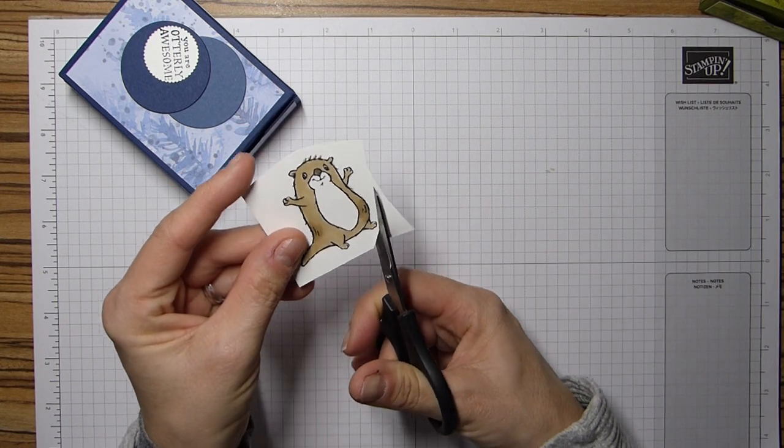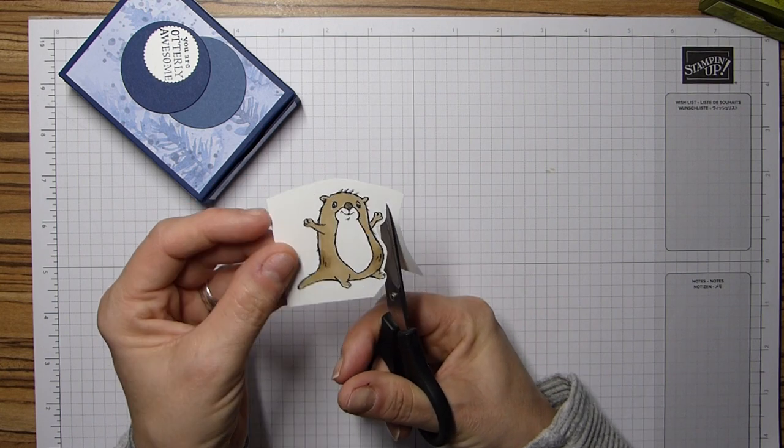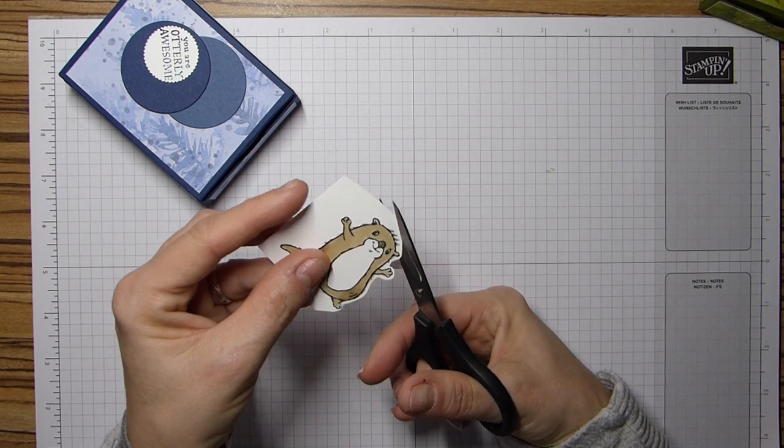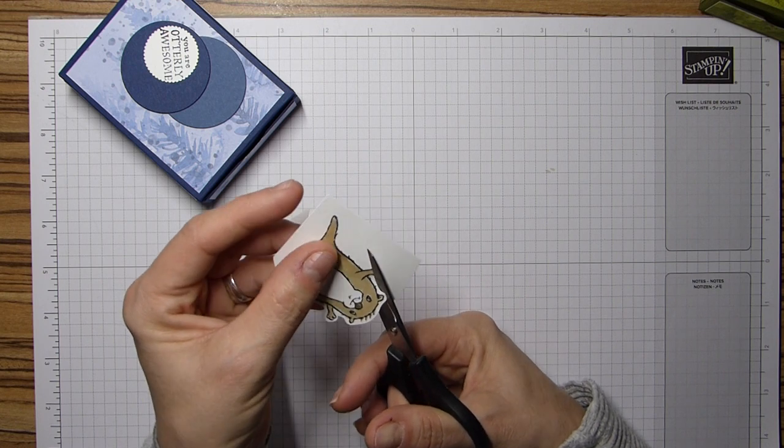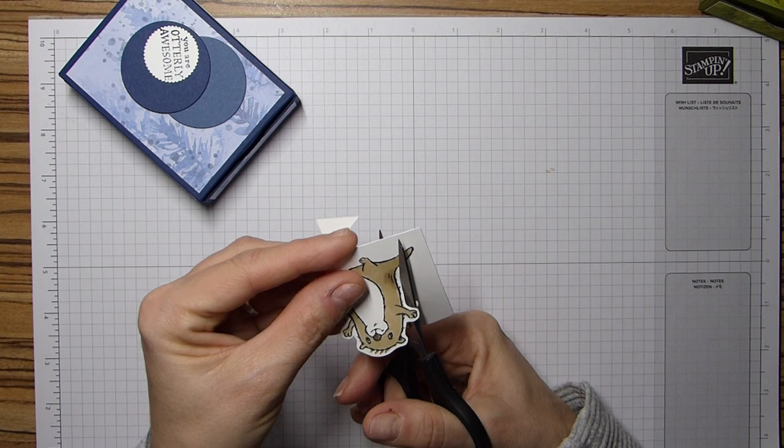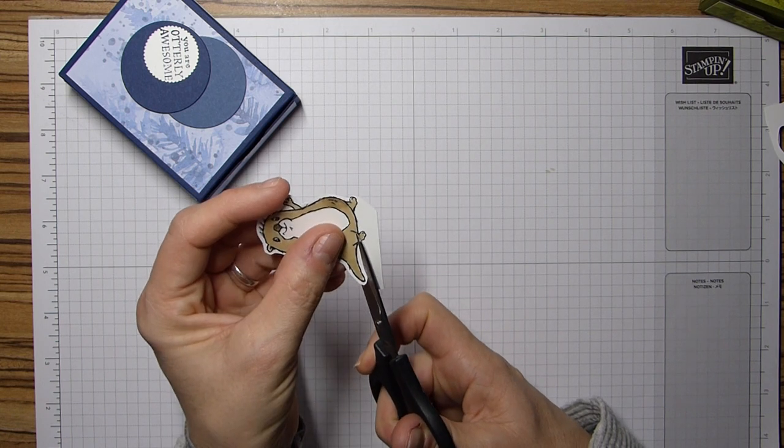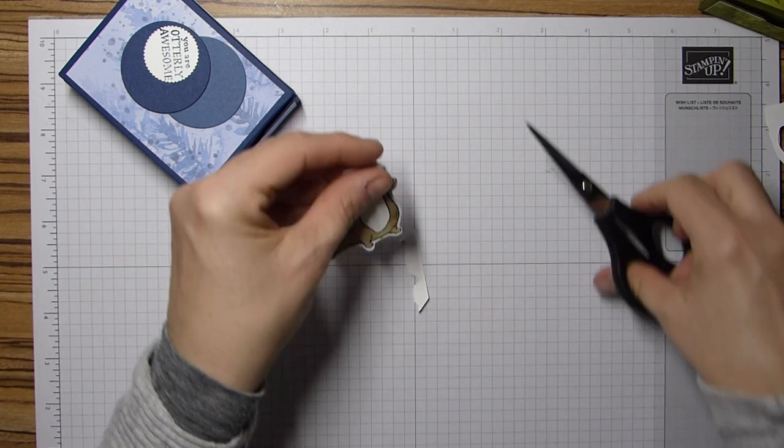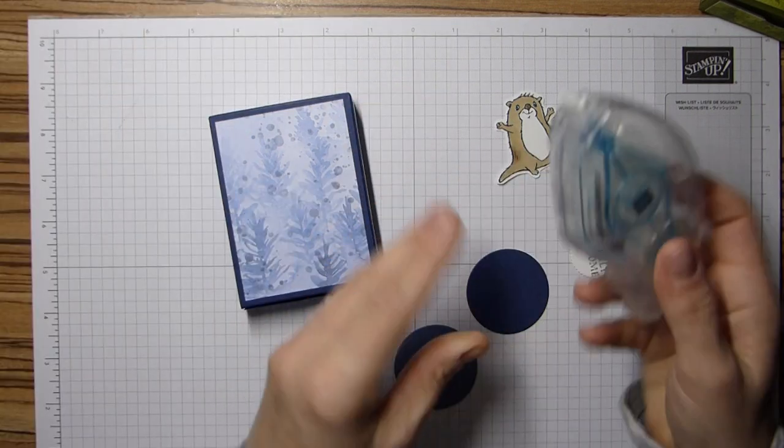And then, I'll just fussy cut. Super quick round. And again, you don't need to be too perfect with this either. Again, just going back to before, I'm literally just moving the card. Not moving my scissors really. It does make everything a lot easier. And then, kai kips. That was quick. Okay, so let's get this stuck on here.